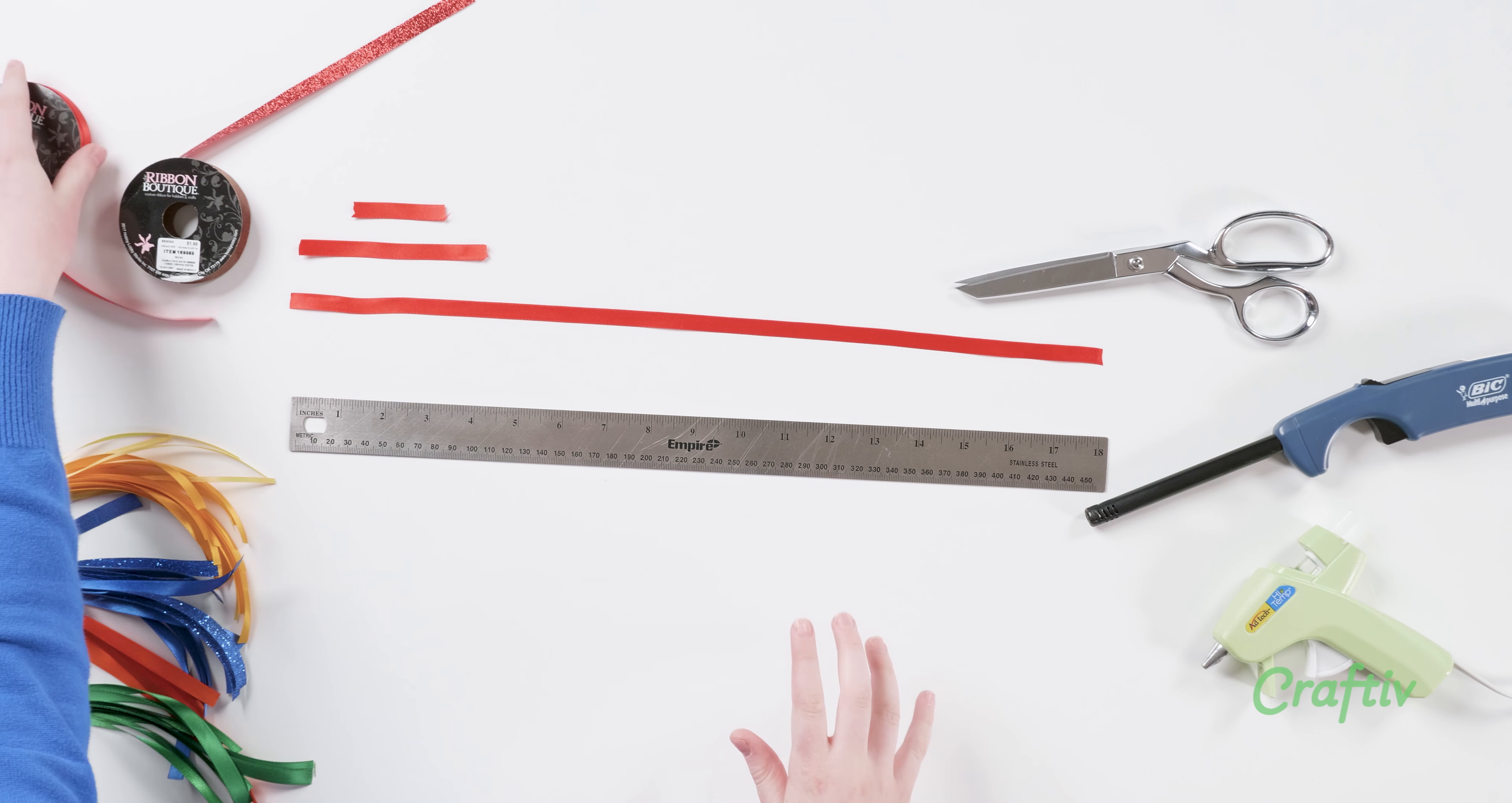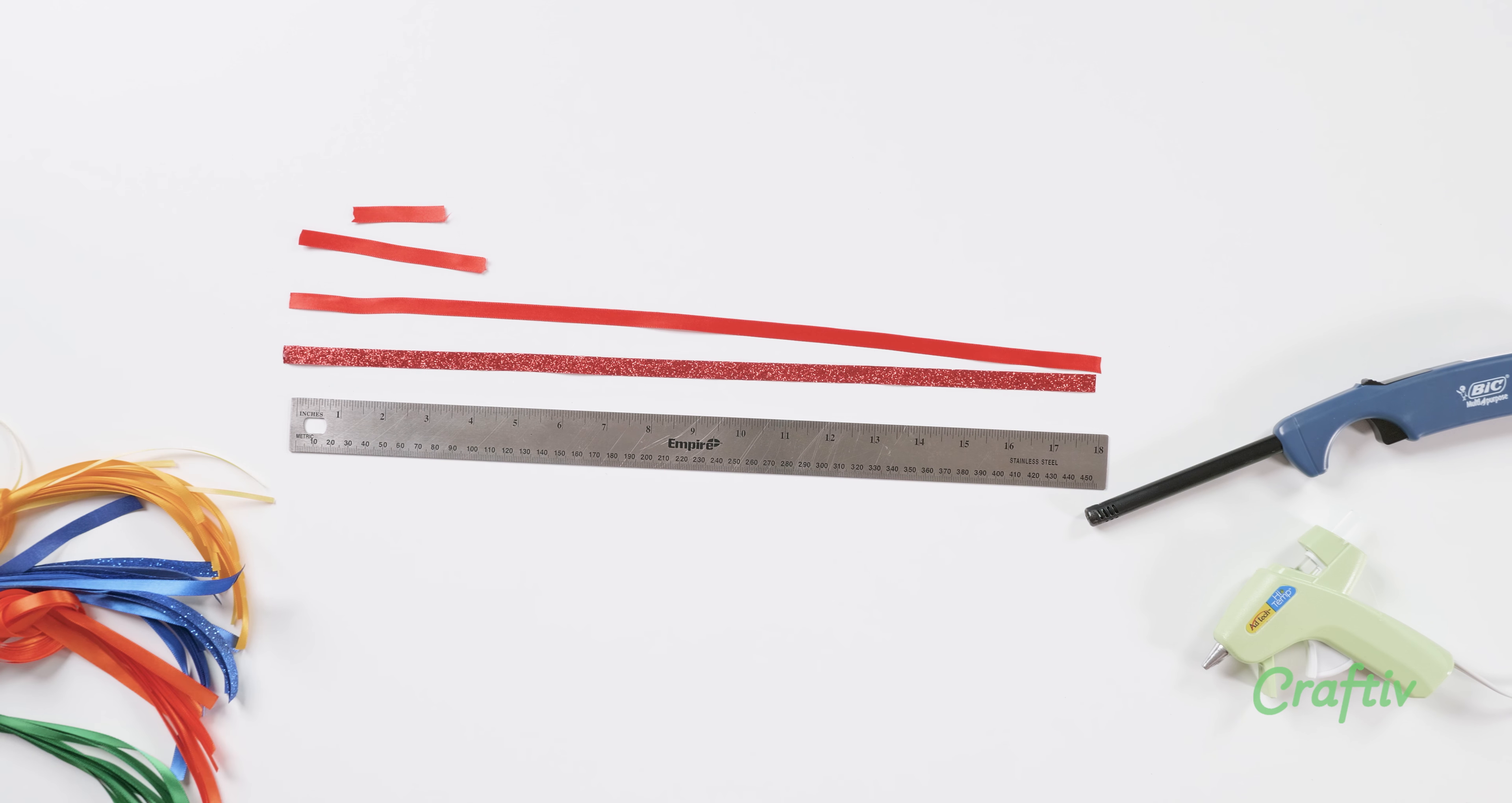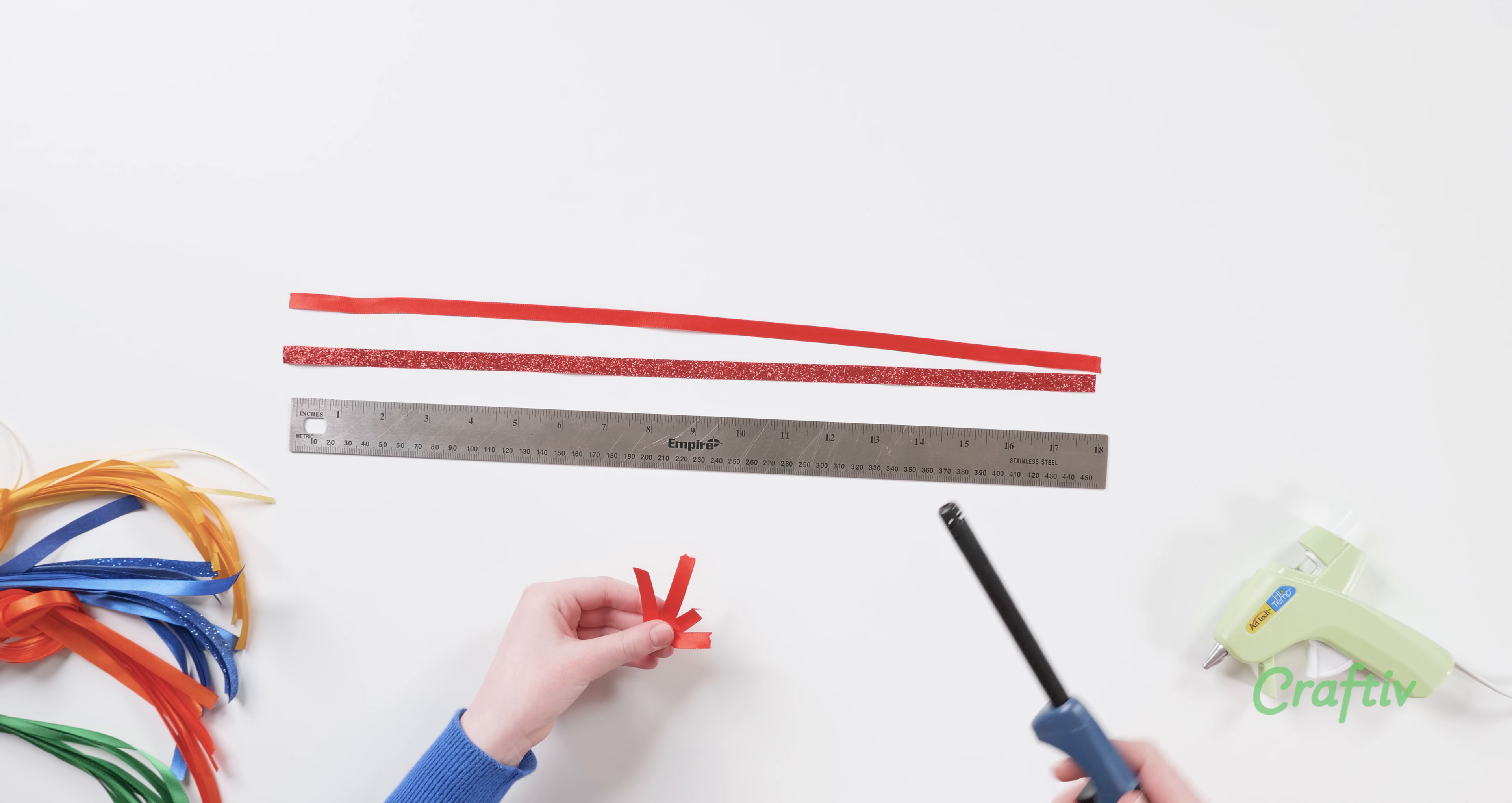Next, we will cut out 12 18 inch ribbons. These ribbons can be mixed and matched with different types, tones and textures. I like to make mine as individual colors so that I can customize my banner for any party.